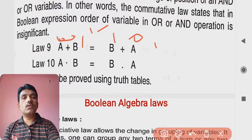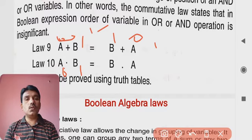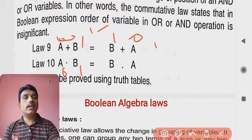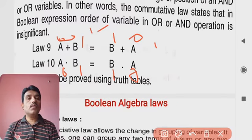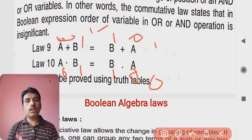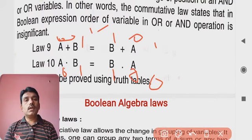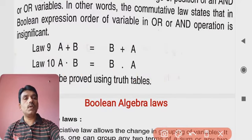For the AND operation with condition 0-1: A AND B is 0 into 1, which is 0. And B AND A is 1 into 0, which is also 0. As we know in AND operation, only when both inputs are 1 will the output be high. So left hand side equals right hand side for all four probabilities of inputs. This is how the commutative law is proven simply using truth tables.